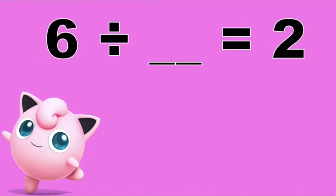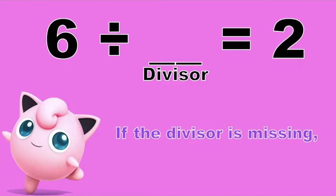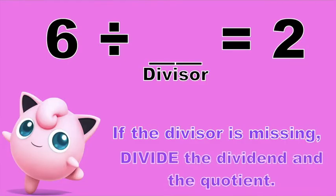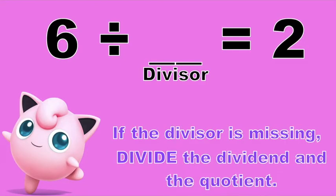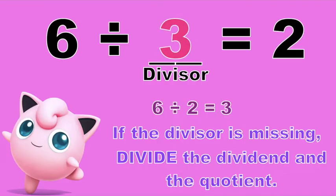How about if I have this: 6 divided by blank is equal to 2. This time, children, our missing number is our divisor. So what are you going to do to find it? Always remember, if the divisor is missing, all you need to do is to divide the dividend by the quotient. So let's divide it. 6 divided by 2 is equal to what? Good job! That is 3. So that means our divisor is 3.